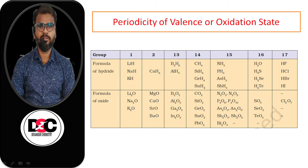From some more compounds, some periodic trends are observed in the valence of elements. The compounds they form — hydrides and oxides — are shown here in a tabulated form in the periodic table.